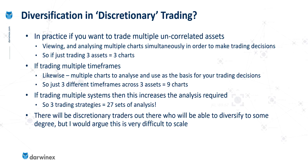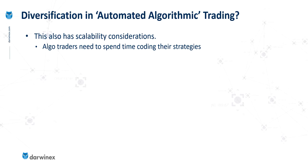Now let's look at algo traders. There are scalability considerations here also, and this tends to come around the fact that it generally takes a significant amount of time to develop an algo trading system — starting off with that initial system idea or premise, going through the development stage, the optimization stage, validation stages, position sizing, strategy development, and so on. All of this takes time to do and all takes time to code, and this is where the pinch point comes with algo trading.